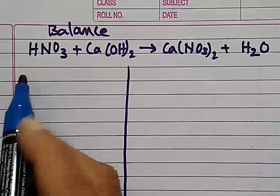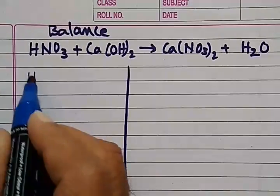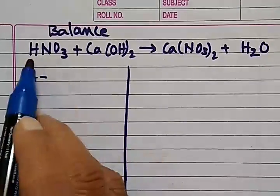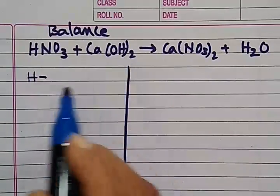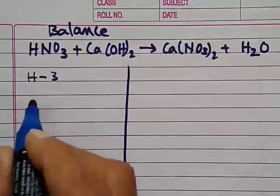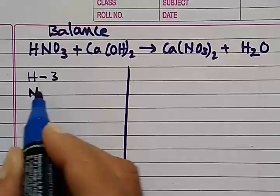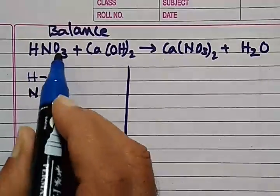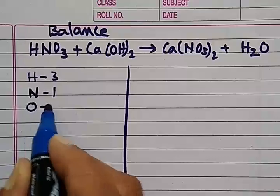Let us take hydrogen, here one, here two, so three are there. Nitrogen only one, and oxygen here three, here two, five are there.